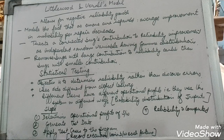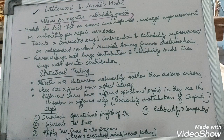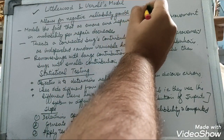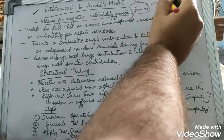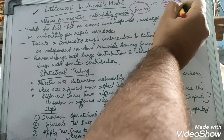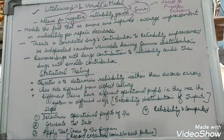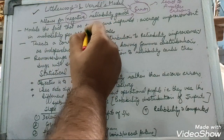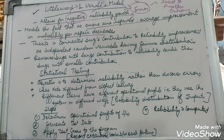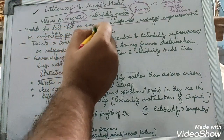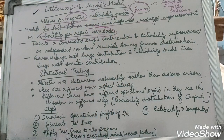The next model is the Littlewood and Virall model, which is considered a practical one because it allows for negative reliability growth. Negative reliability growth can occur when trying to remove one error leads to another error being introduced. This model models the fact that as errors are repaired, the average improvement in reliability per repair decreases.